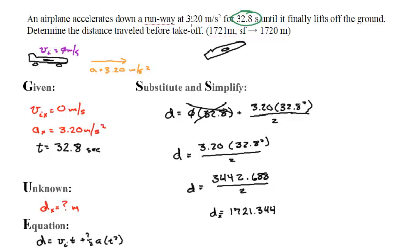And now if I take a look at significant figures, I see that 3.20 is 3 sig figs, 3 sig figs. So my answer is 3 sig figs, 1, 7, 2, and then I need to include a 0 to represent the correct places and meters.